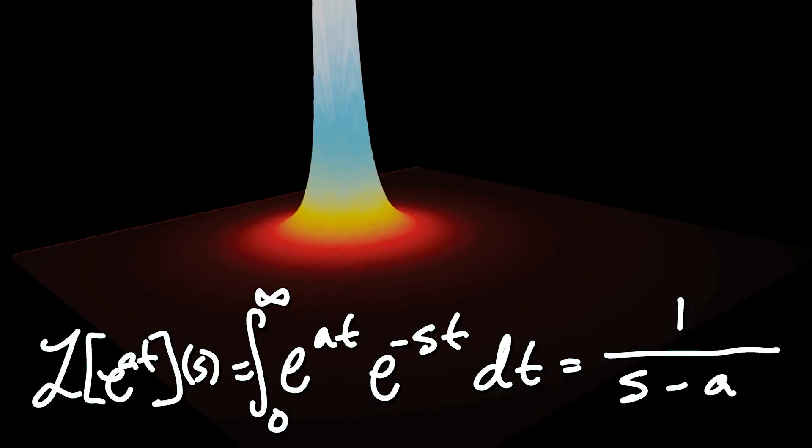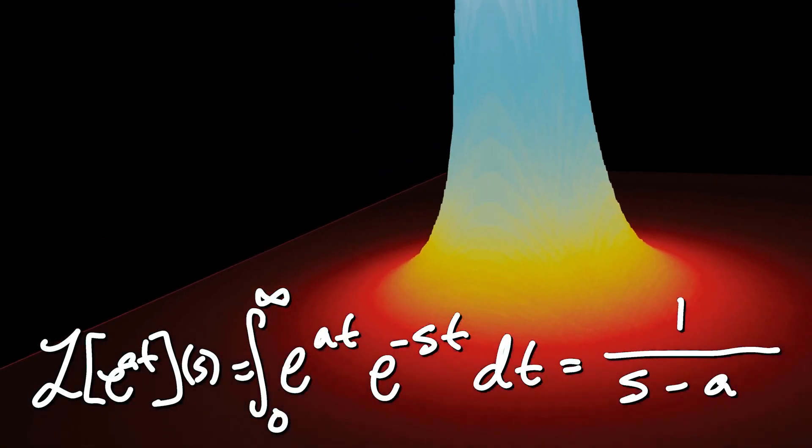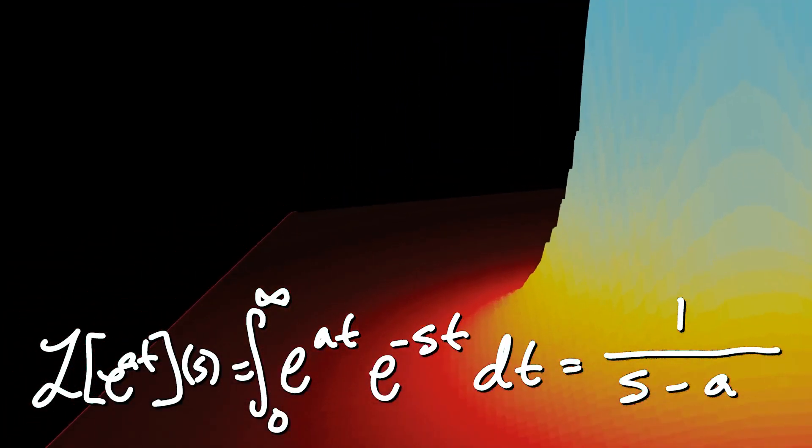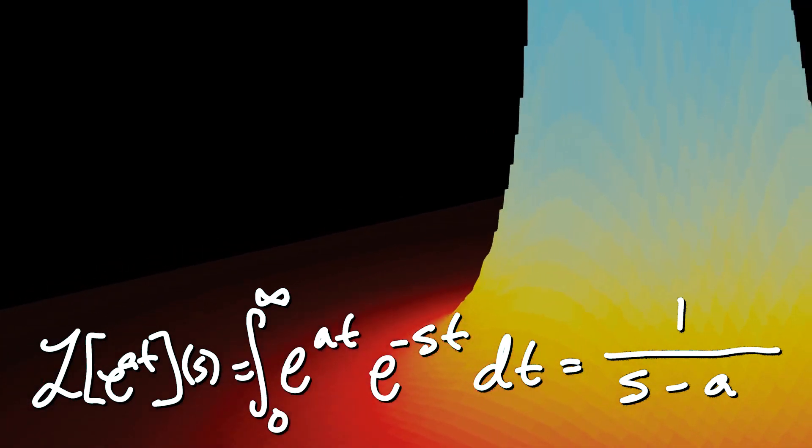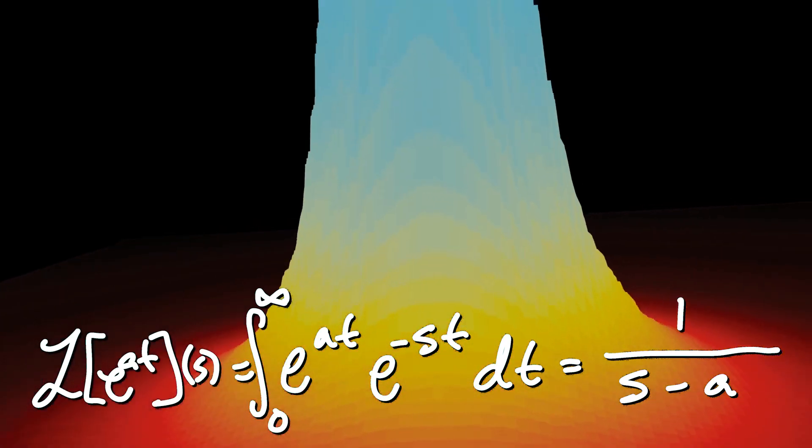The Laplace transform as presented in differential equations is an integral of a function against a decaying exponential. With this, a table of Laplace transforms can quickly be determined by using notions from calculus. And immediately we see that the Laplace transform of e to the at is equal to 1 over s minus a.